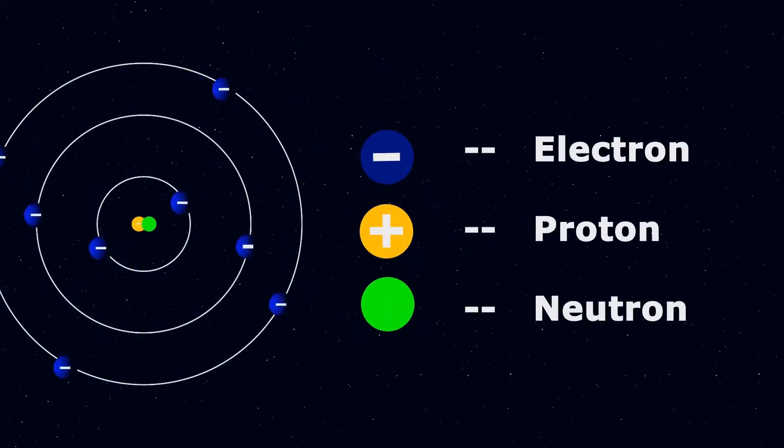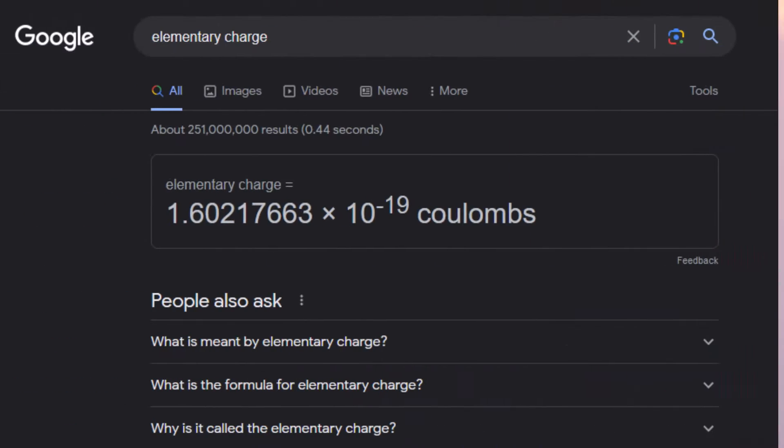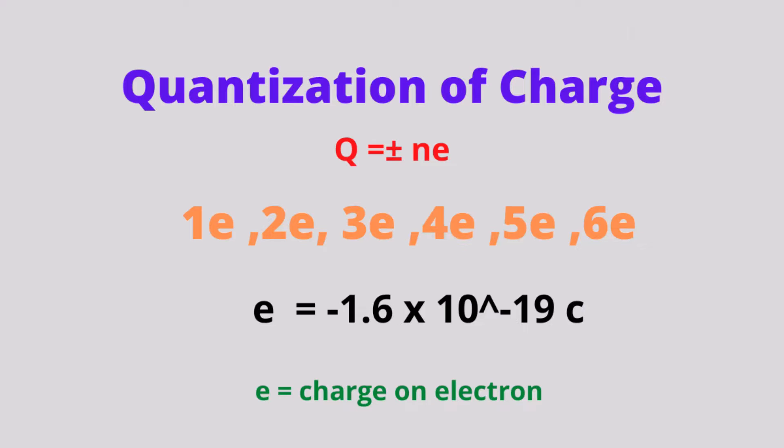From all we understand, atoms are made up of protons and neutrons in the center — what we call the nucleus — and this is surrounded by a cloud of electrons. Electrons are said to have the smallest possible charge you can ever attain. Every electron has a charge of about 1.6 times 10 to the power negative 19 Coulombs, which is also called the elementary charge. Every other charge in the universe should be a multiple of this elementary charge, because charge is quantized, and this was actually proved by this guy.